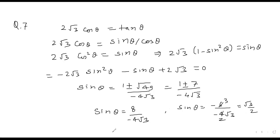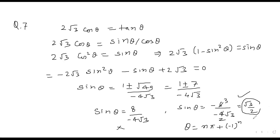The value sin θ = −8/(4√3) cannot be accepted as it's out of range. The valid value gives sin θ = sin(π/3), so the general solution is θ = nπ + (−1)ⁿ · π/3.